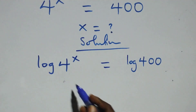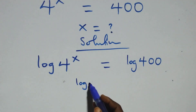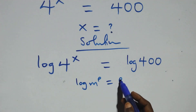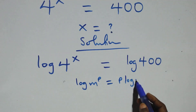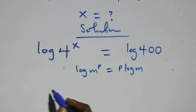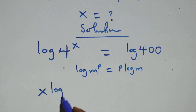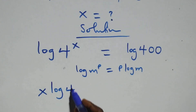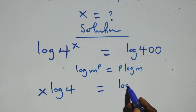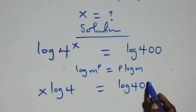Here we apply the power log rule: when we have log of m raised to power p, this is the same as p times log m. So here we have x times log 4 equals log of 400 on this side.